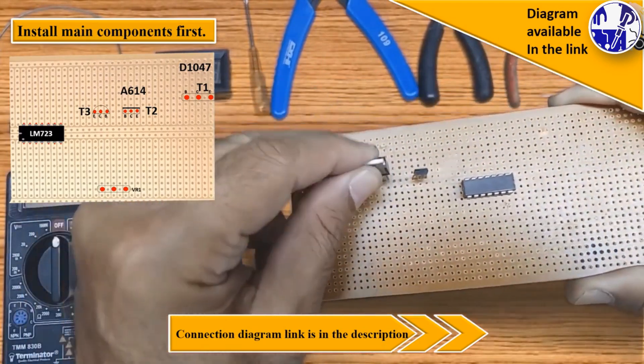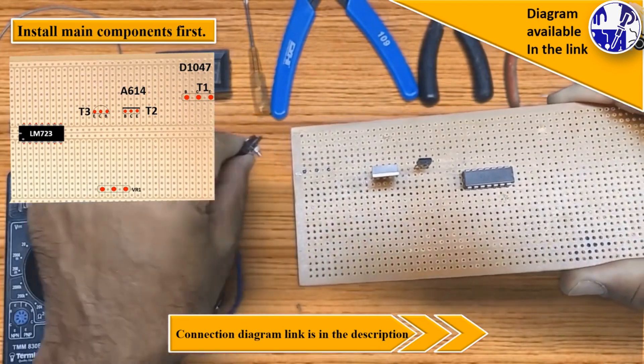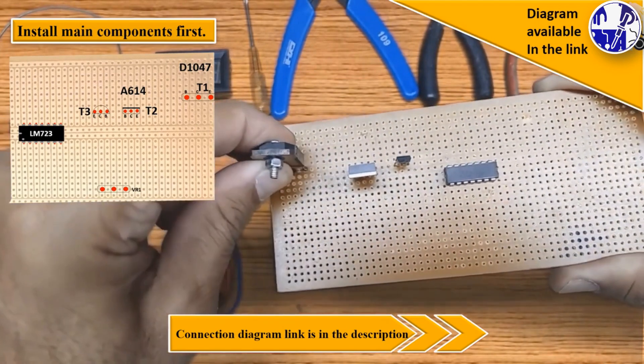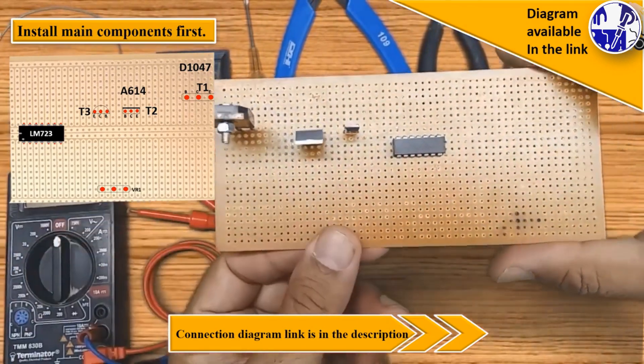First, begin by installing the main components on the Vero board, including IC LM723, power transistor D2047, and A614.